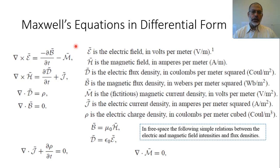Maxwell's Equations are four equations which represent the relation between the electric and magnetic fields, the electric current sources, the electric charge, and the features magnetic currents.